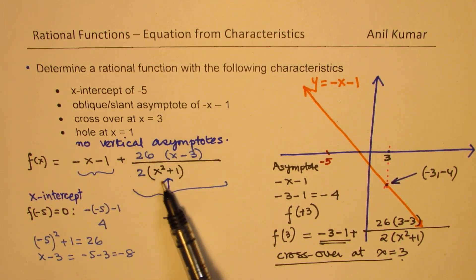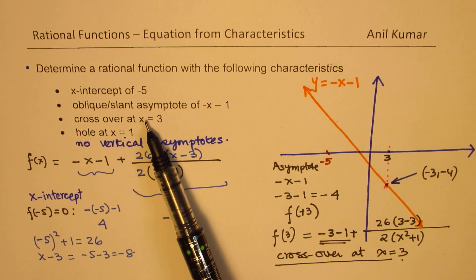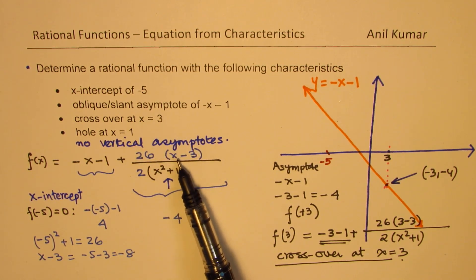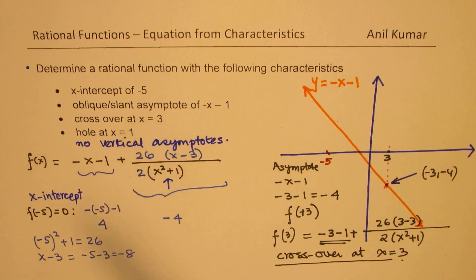So this particular equation helps us to achieve crossover x equals 3. So at this point, if I make all this 0, which I can make only if x minus 3 is 0.